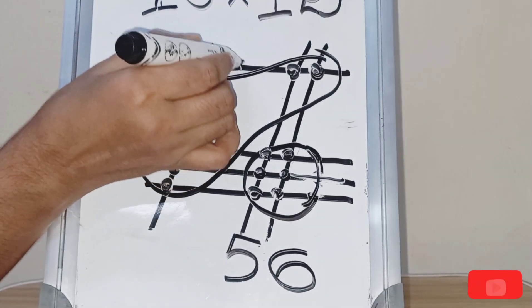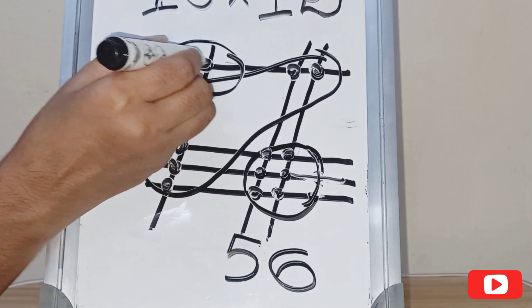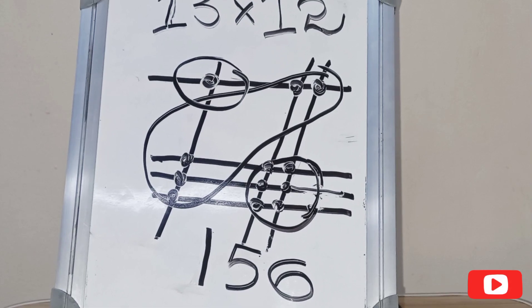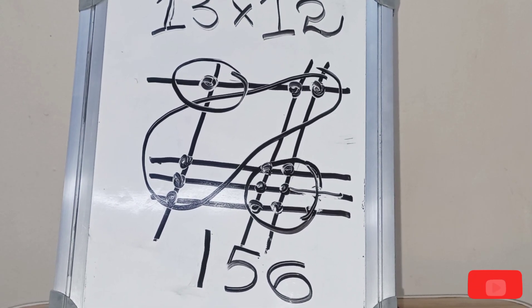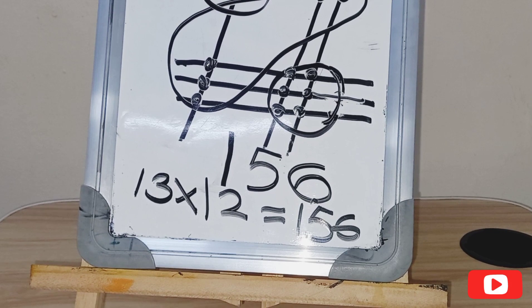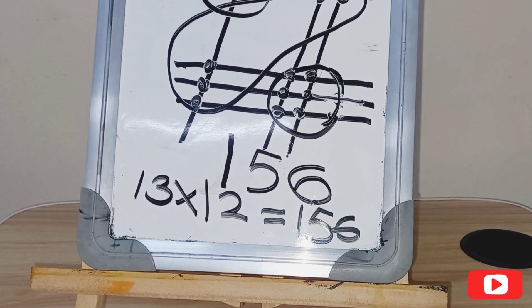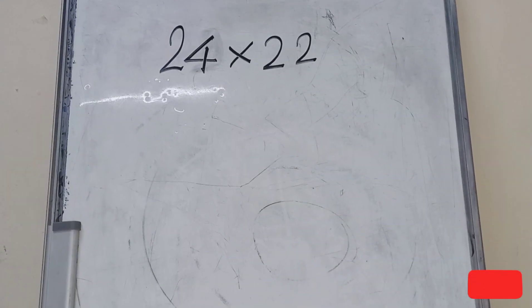Now count the top. There is only one point. So the product is 156. 13 into 12 is equal to 156. We want to try this with other numbers.